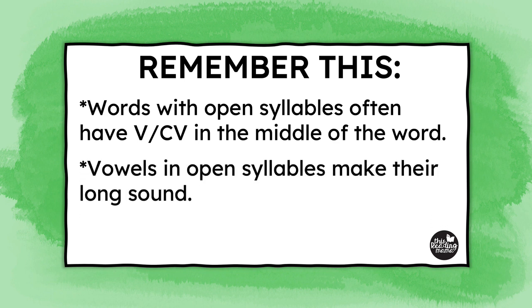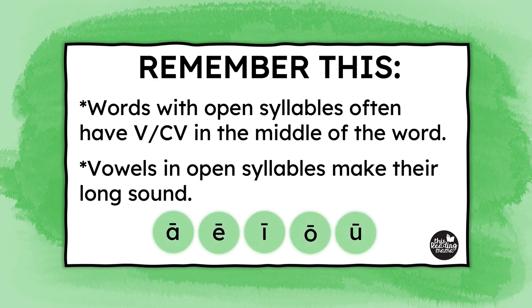Vowels in open syllables make their long sound — A, E, I, O, U. They're free to shout their name out the door.